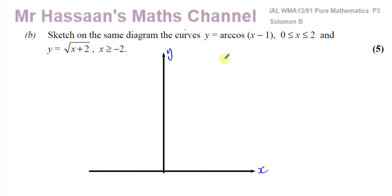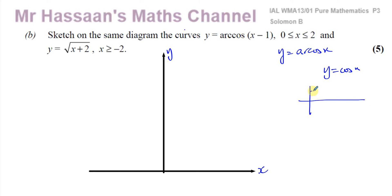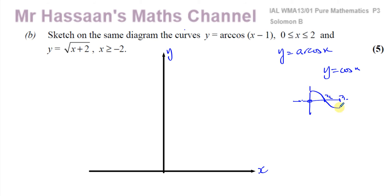Let's think about y equals arc cosine x. First, consider y equals cosine x - that's a curve that is a many-to-one function, meaning many x values go to the same y value. So the inverse will not be a function if we left it as is. In order to make it a function, they restrict the domain so that it becomes a one-to-one function. They get rid of everything outside, restricting it to values between 0 and π, with π over 2 in the middle. Now it's a one-to-one function.